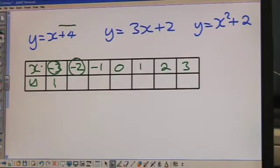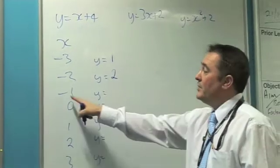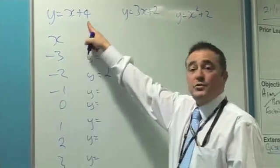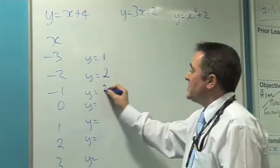Minus 2, add on 4, we're going to be at plus 2. A value of minus 1x, add 4 onto it, we're going to be at a positive 3.